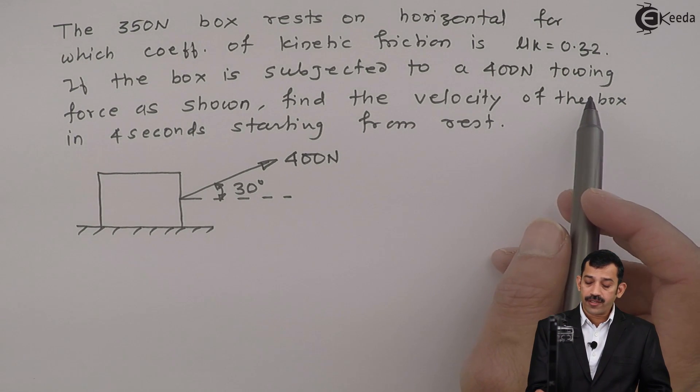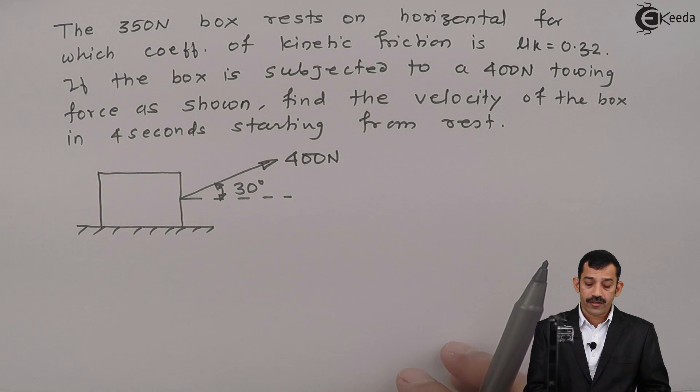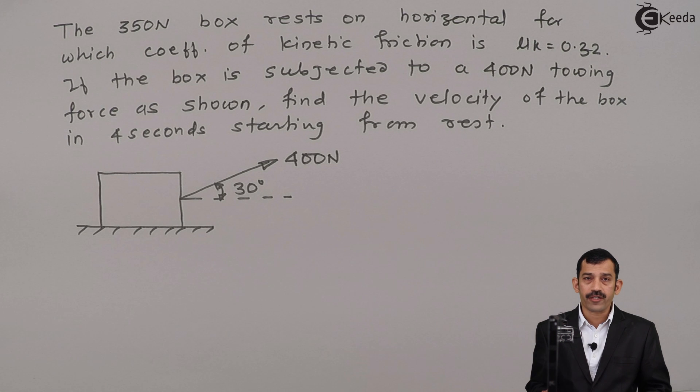If the box is subjected to a force of 400 Newton, find the velocity of the box in 4 seconds starting from rest. That means initial velocity is 0. After 4 seconds you have to find out velocity.